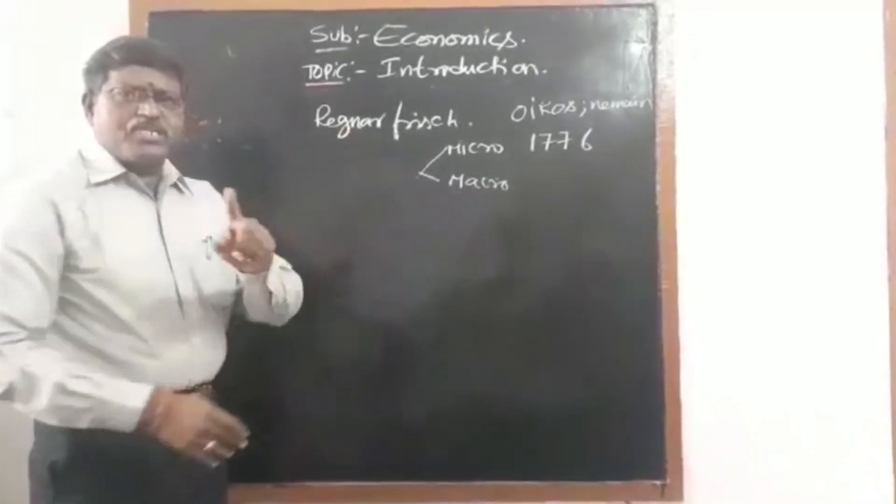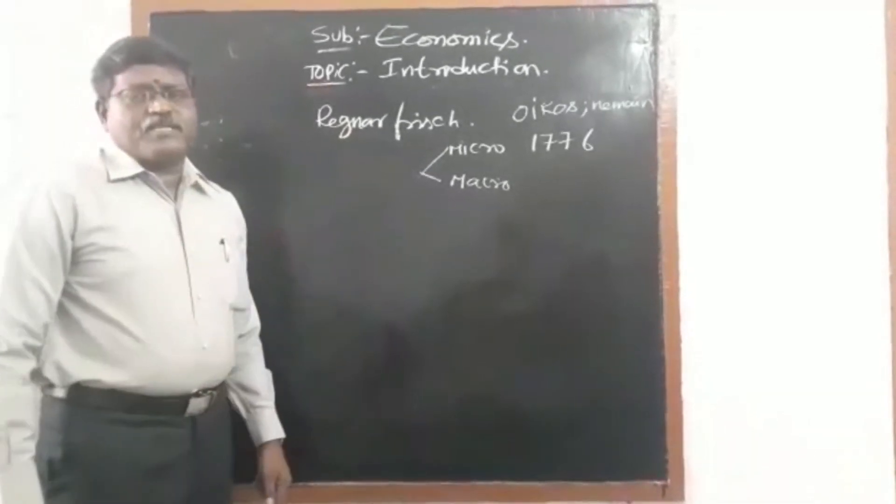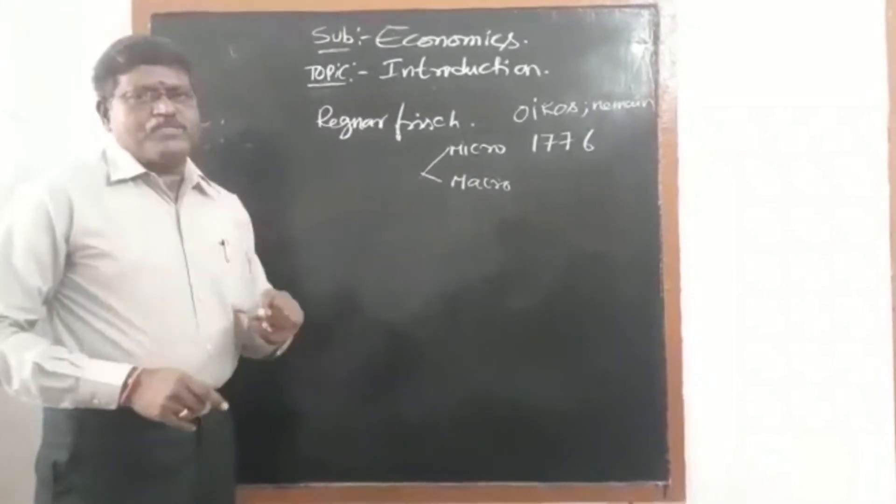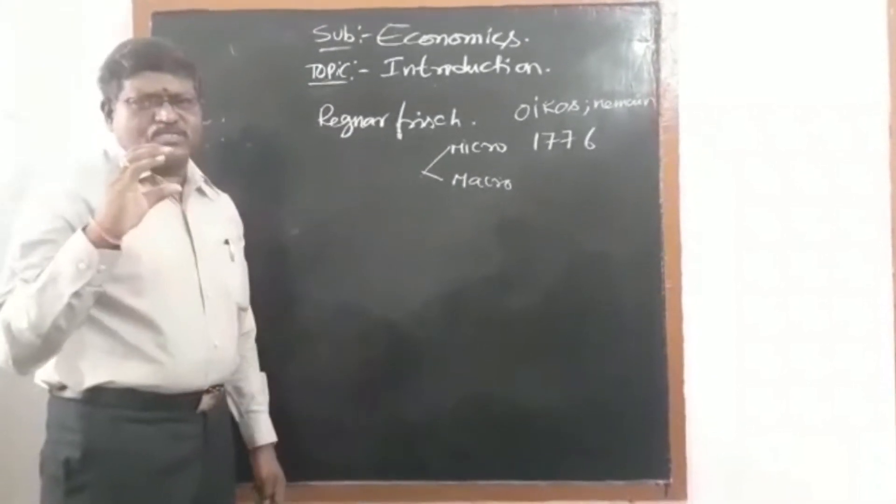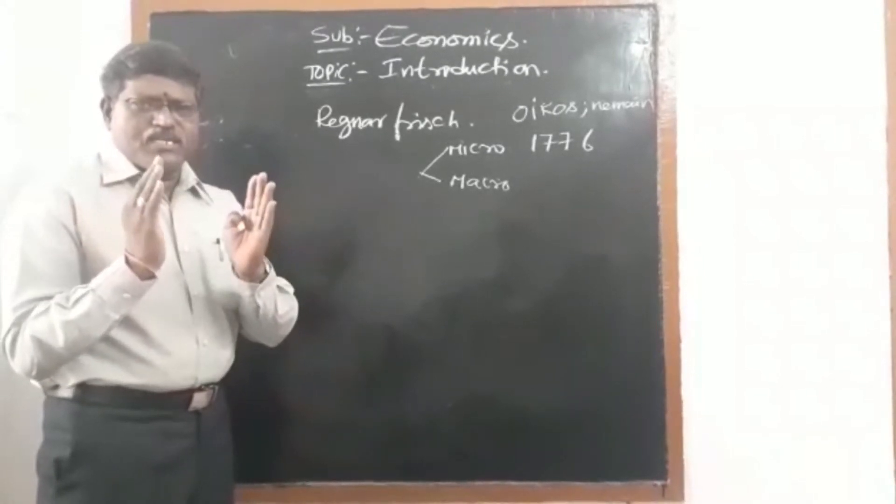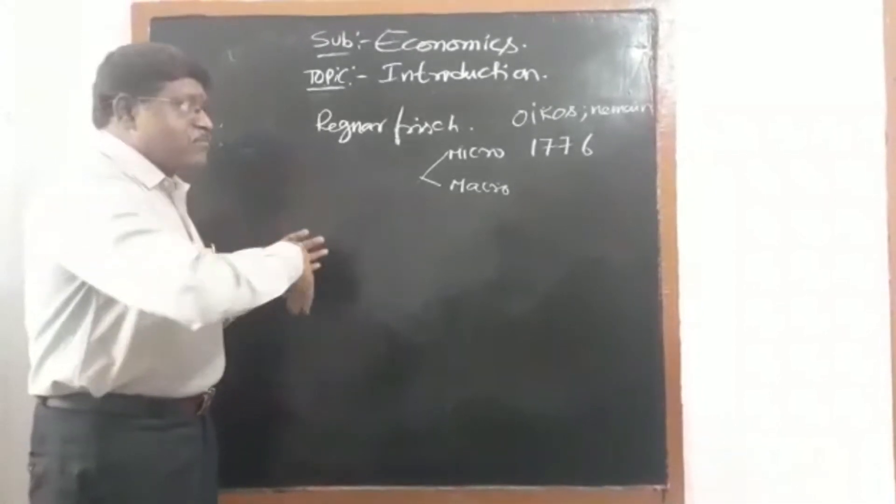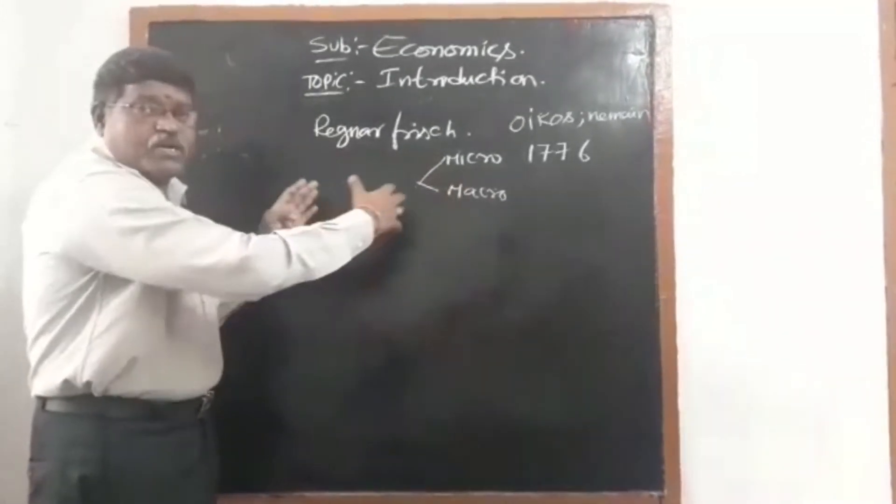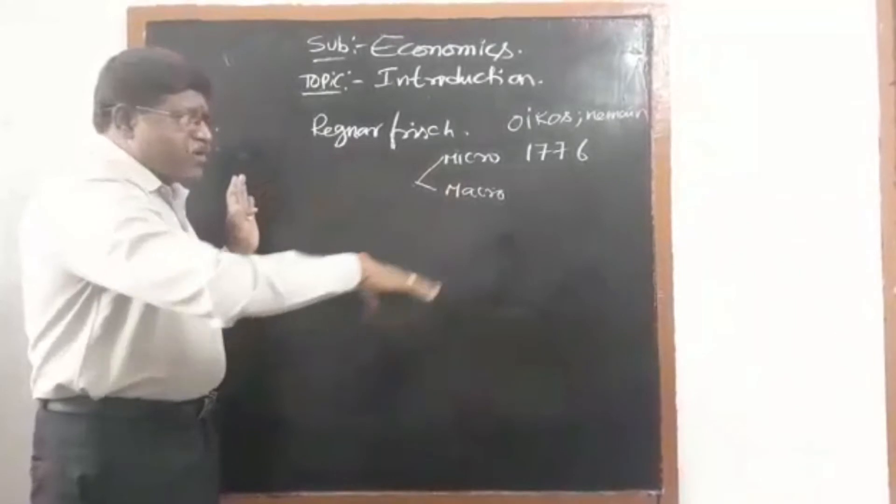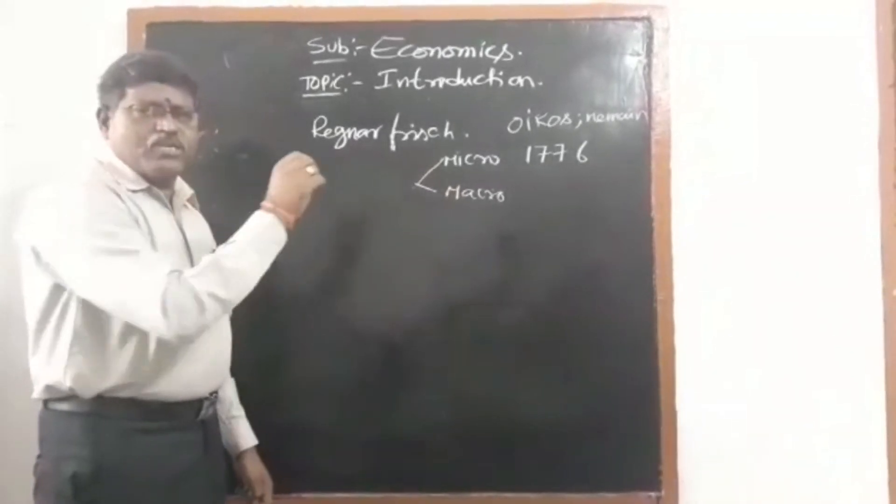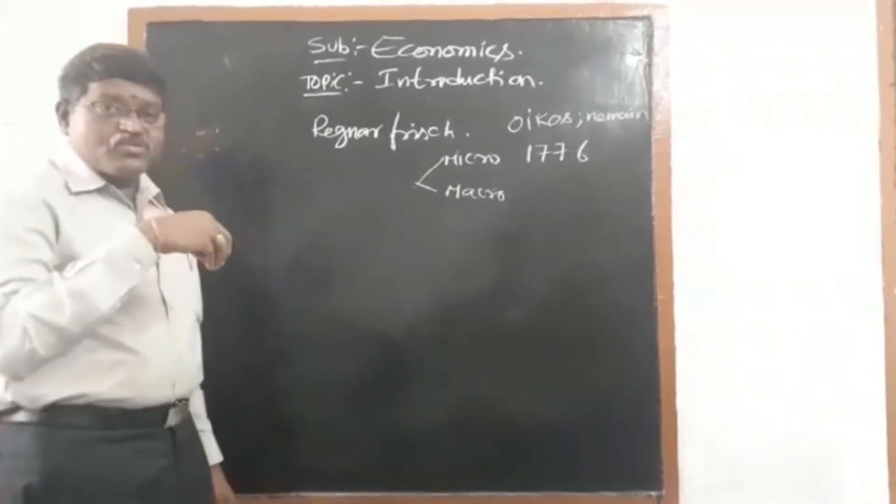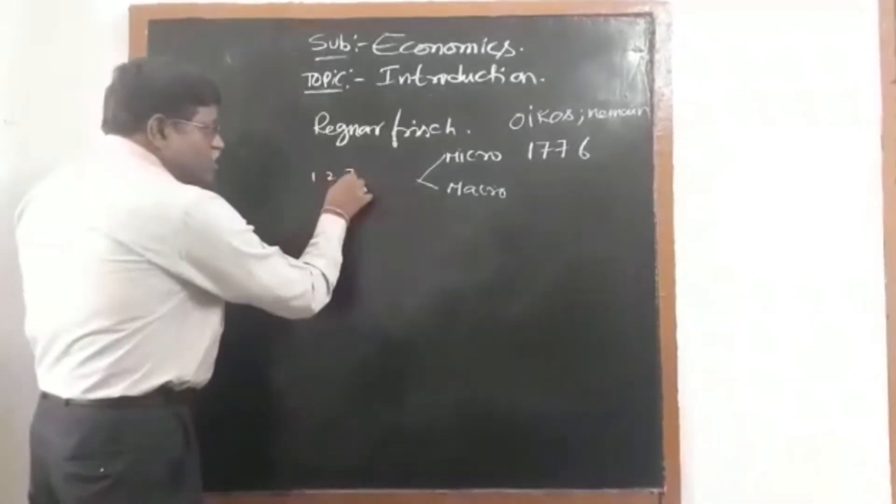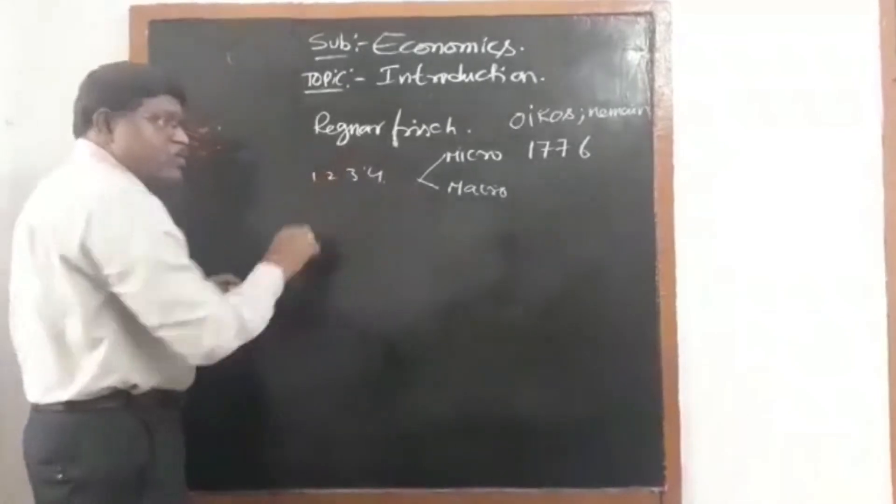Because each option needs a thousand rupees to satisfy, is it possible? Do you have four thousand rupees? No, you have only a thousand rupees with you. We have very limited resources, only limited resources. We have unlimited wants and so many options, but we cannot satisfy all the options together. We can satisfy only one single option, so you face a choice problem.